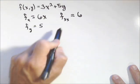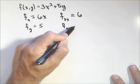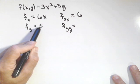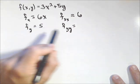f sub yy. Well, f sub y is 5, it's just a constant, the derivative of that with respect to y is 0.